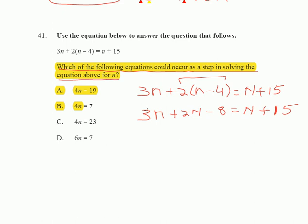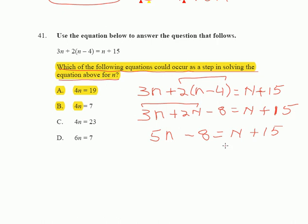Let's continue by combining what we can. We now have 5N — because 3N plus 2N gives you 5N — minus 8 is equal to N plus 15. Now look at this carefully: I would keep everything positive. So just subtract an N from each side — that's really negative 1N on each side.